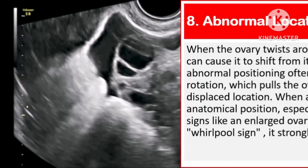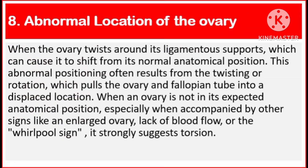Number 8: Abnormal location of the ovary. When the ovary twists around its ligamentous supports, it can shift from its normal anatomical position. This abnormal positioning often results from the twisting or rotation, which pulls the ovary and fallopian tube into a displaced location. When an ovary is not in its expected anatomical position, especially when accompanied by other signs like an enlarged ovary, lack of blood flow, or the whirlpool sign, it strongly suggests torsion.